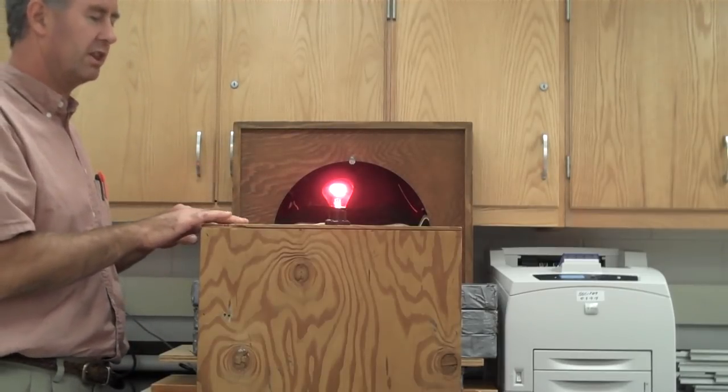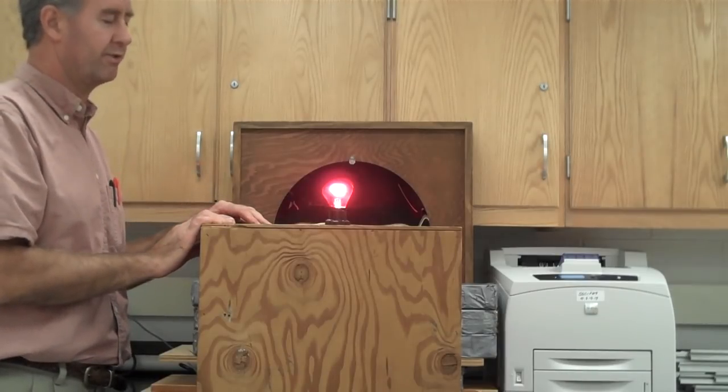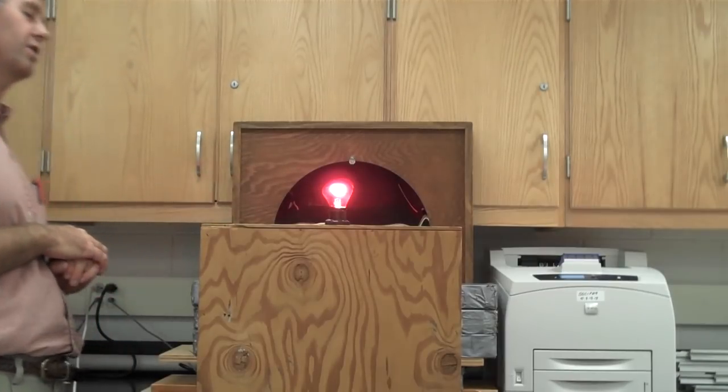The light bulb is right underneath that imaginary axis known as the principal axis. And when it is, the image of the light bulb is inverted across the axis and shows up right there inside of that socket.